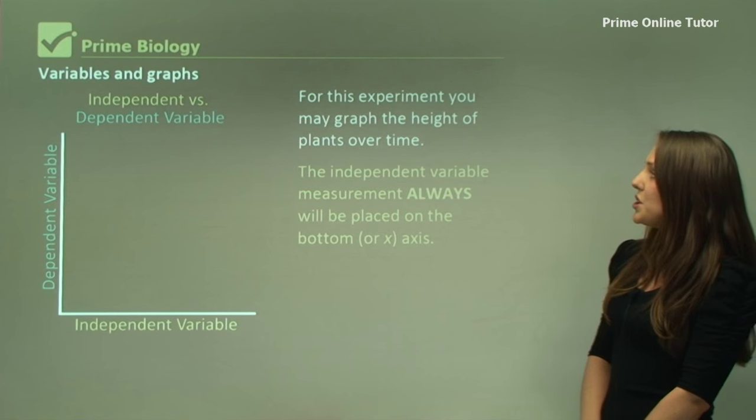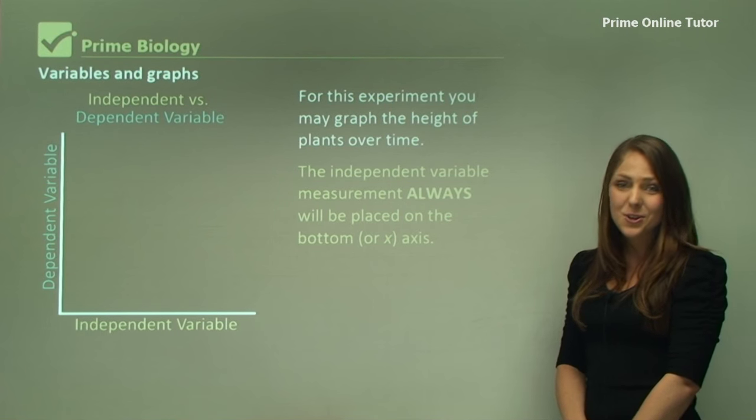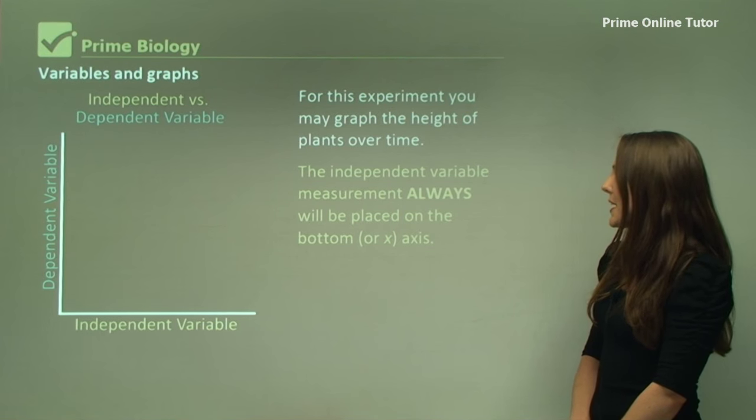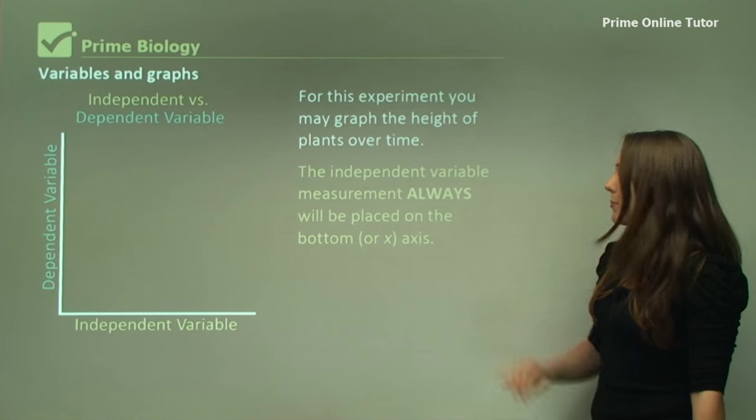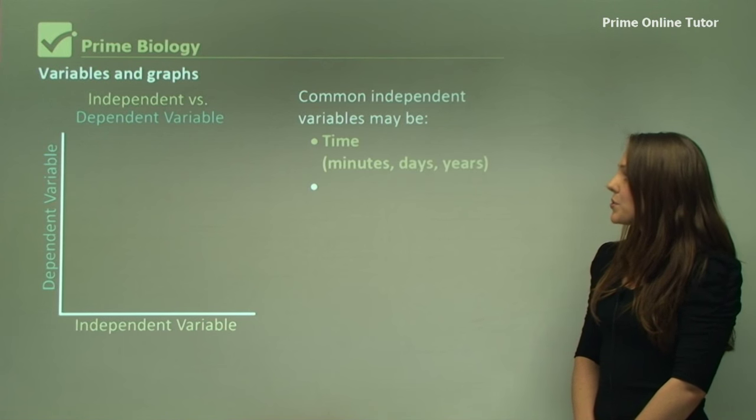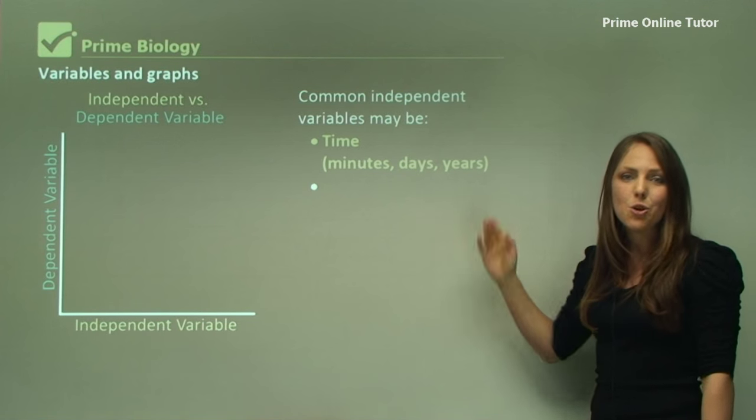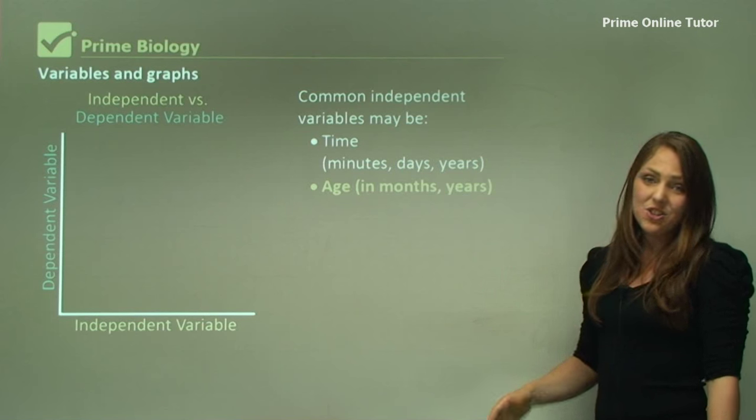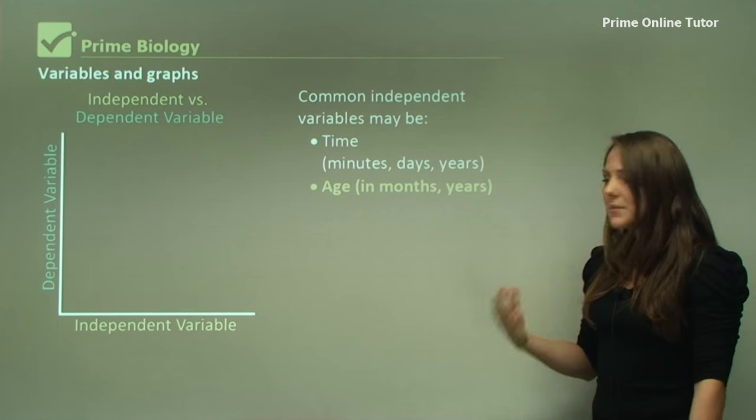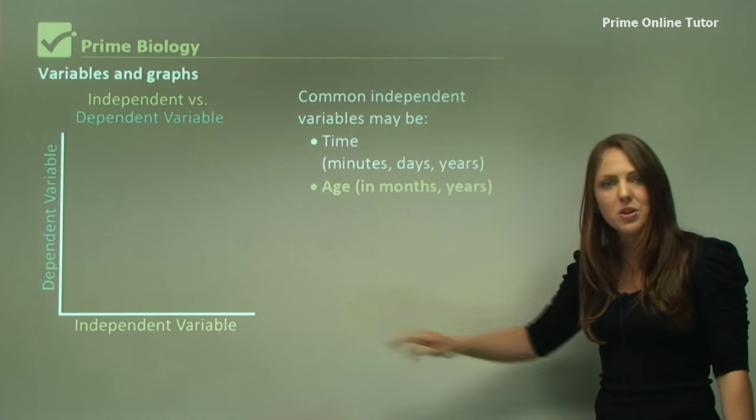So for this experiment, you may graph the height of plants over time. The independent variable always be placed on the bottom. So common independent variables may be time. So time might be in minutes, in days, or in years, or age in months and years. Time tends to be a very typical one that goes on the bottom of the graph.